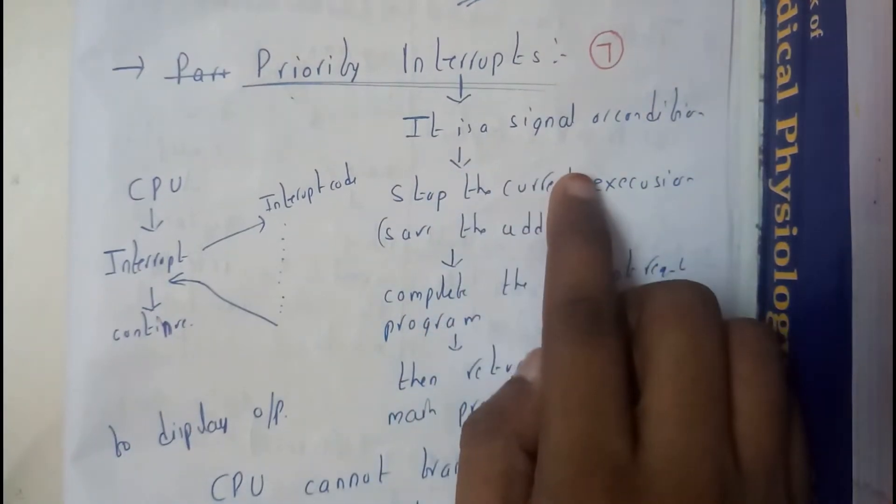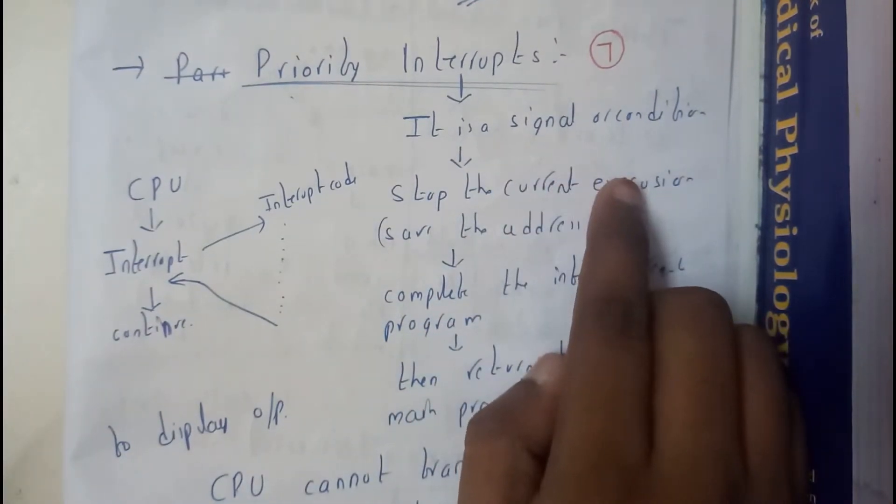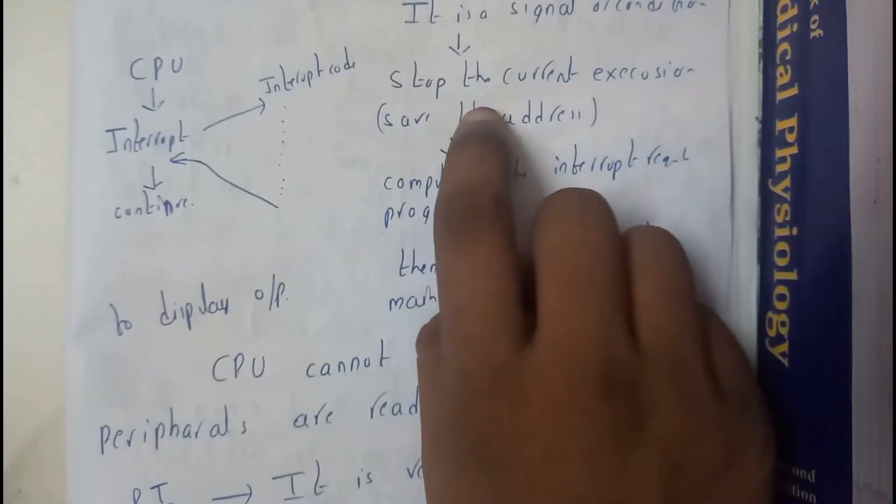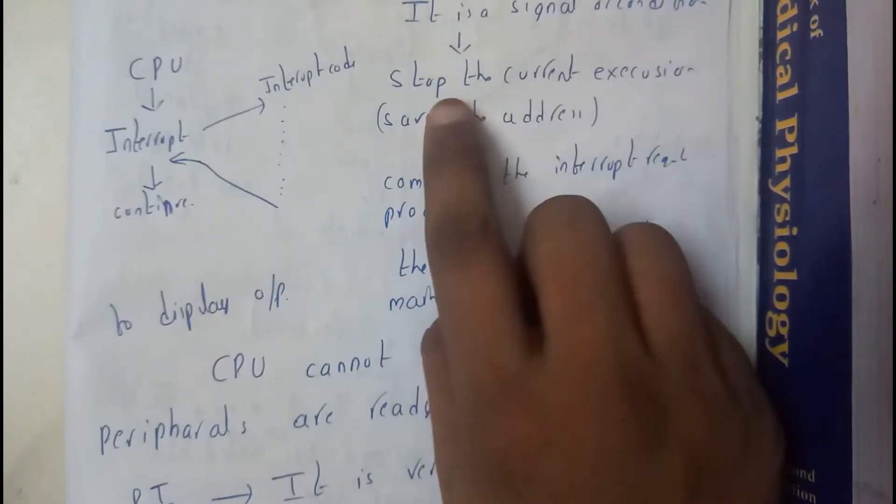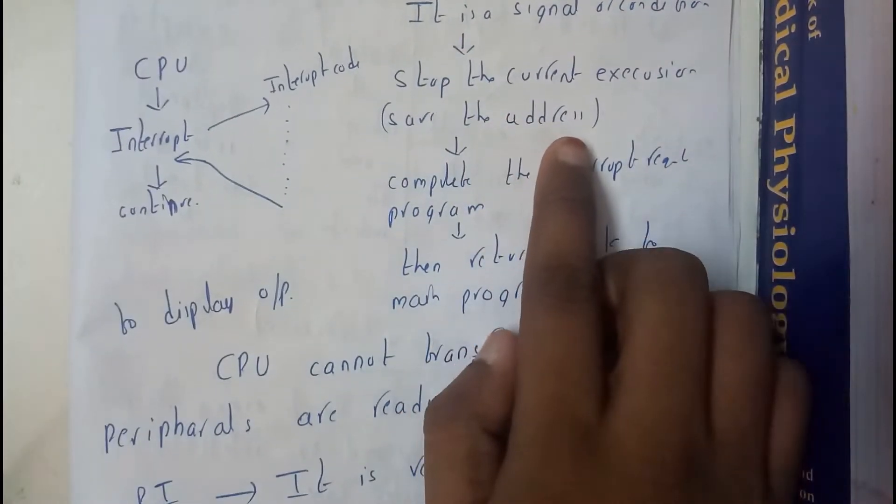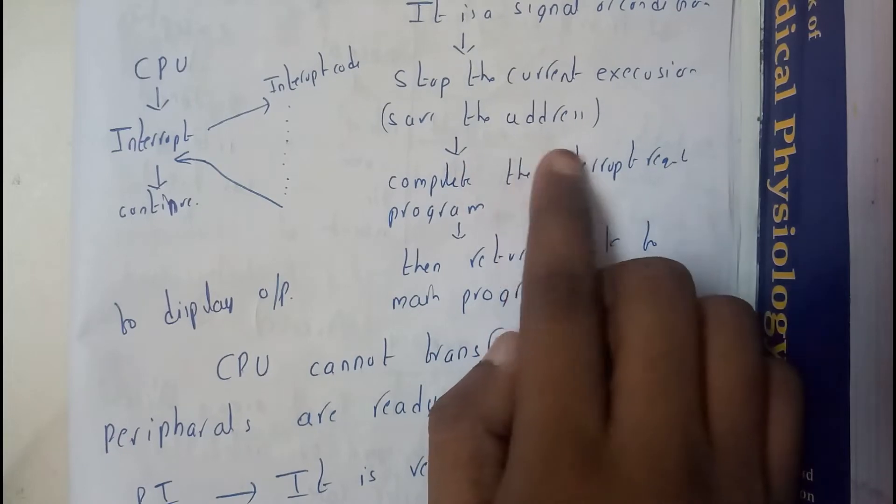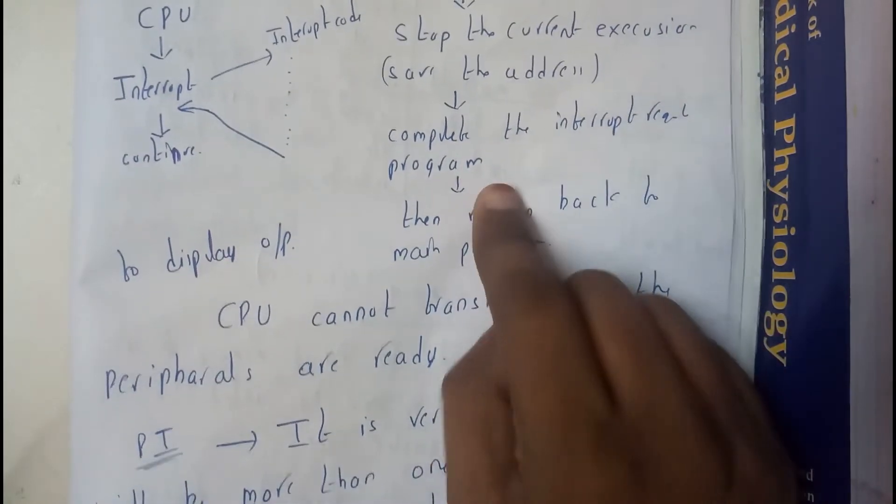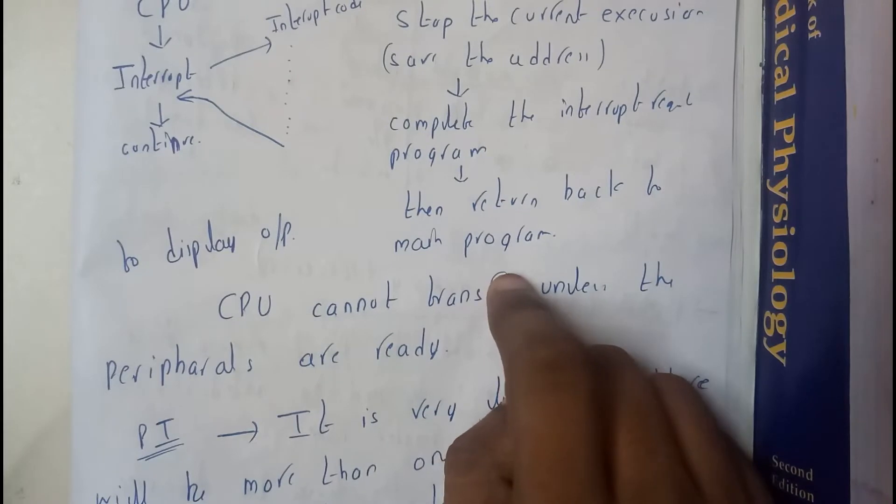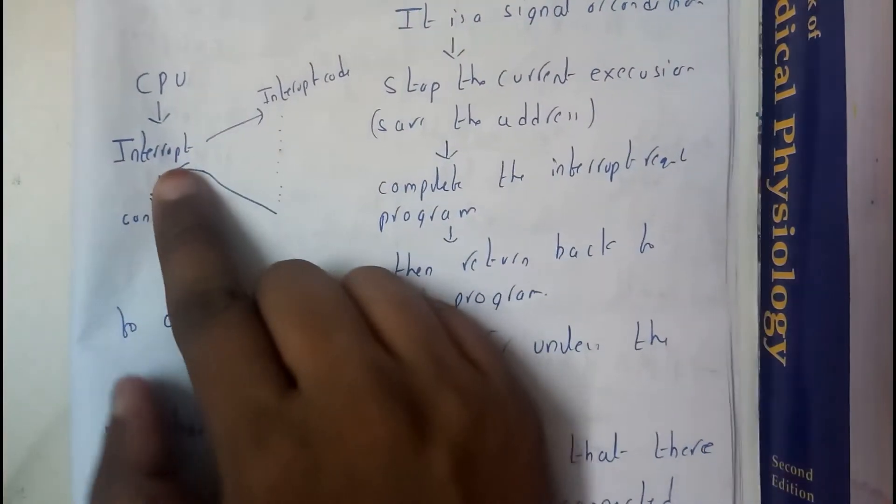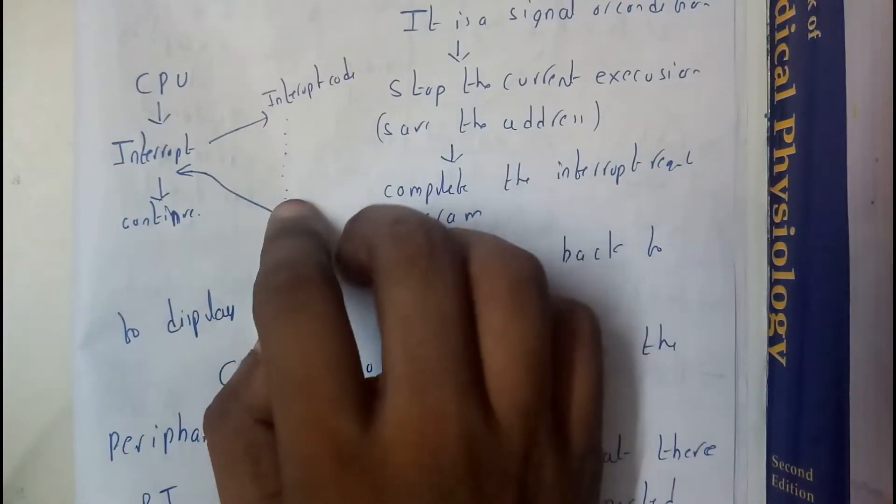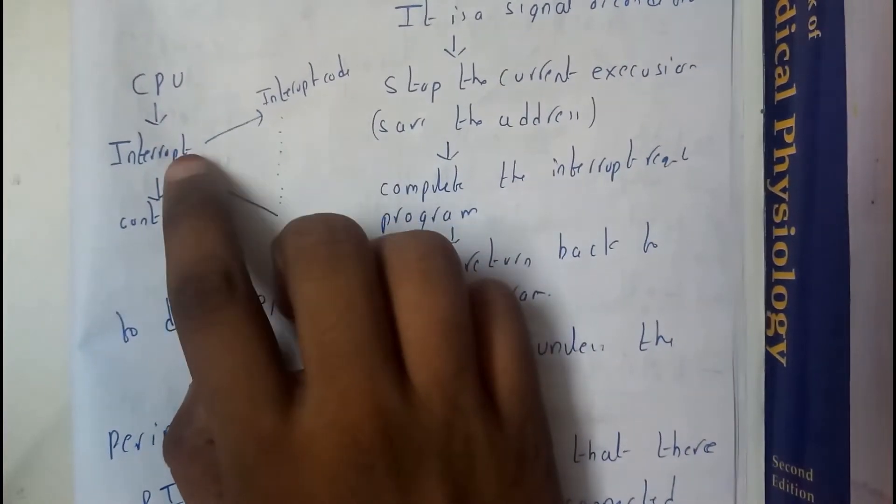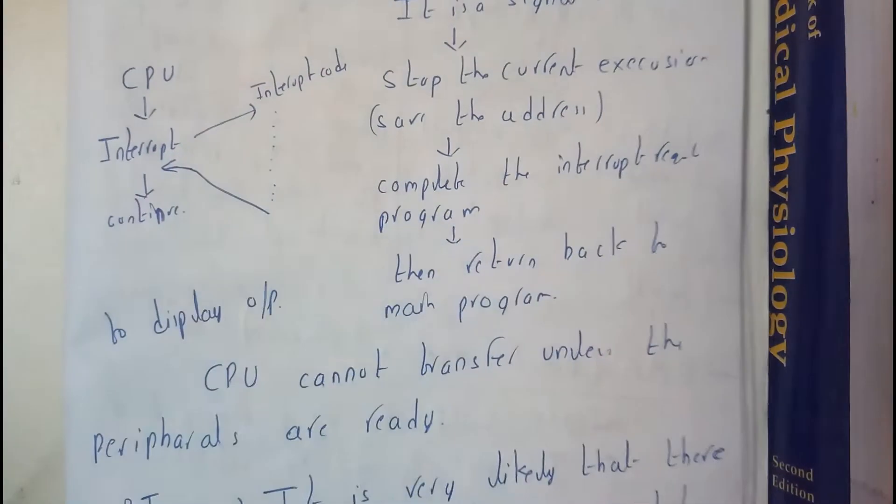So interrupt, it is a signal or a condition. Basically once that interrupt is generated, the CPU stops its current instruction, saves that address, and completes the interrupt request program and returns back to the main program. The flow will be like the CPU, when interrupt occurs, executes that interrupt code and returns back to the starting point of the interrupt and continues the program.